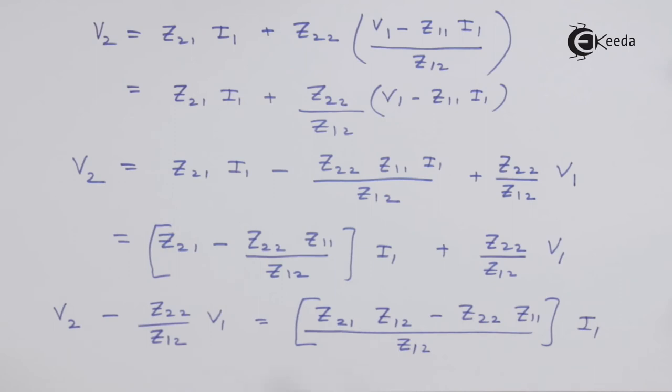So this is the equation that we are getting, we can solve it further. Now if you see this numerator term, it is minus of delta Z. Now what is delta Z?